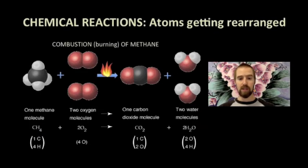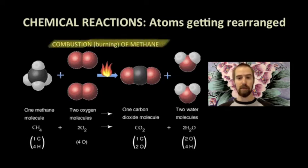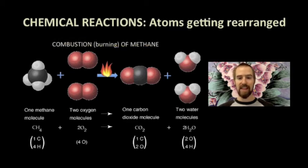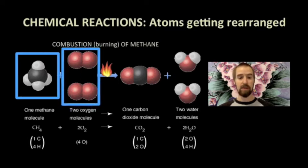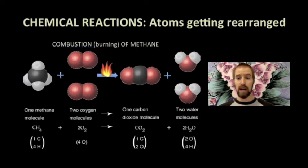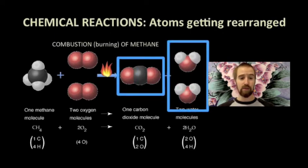Our burning wood example was an example of a combustion reaction. This is also an example of a combustion reaction, but with much simpler molecules. Here we see what happens during the combustion, or burning, of methane gas. Methane is a form of natural gas, like propane, and is highly flammable. In the presence of oxygen, and with enough energy to start this reaction — maybe something like a spark or a flame — one methane molecule reacts with two oxygen gas molecules to form one molecule of carbon dioxide and two molecules of water.